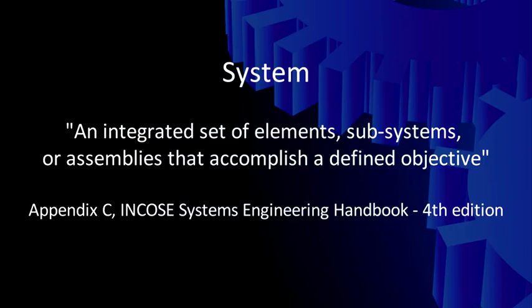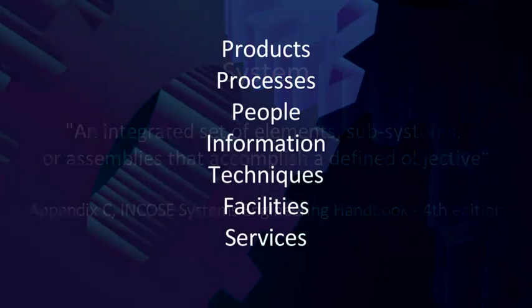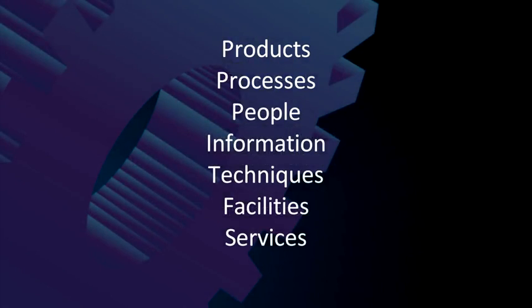Let's start our exploration of systems engineering with the question: what is a system? In the 15288 standard, section 5.2.1, systems are described as man-made, created, and utilized to provide products or services in defined environments for the benefit of users and other stakeholders. The INCOSE Systems Engineering Handbook, fourth edition, defines a system as an integrated set of elements, subsystems, or assemblies that accomplish a defined objective. These elements include products, hardware, software, firmware, processes, people, information, techniques, facilities, services, and other support elements. These are definitions of systems in the real world, which need to be distinguished from representations and abstractions that represent concepts.